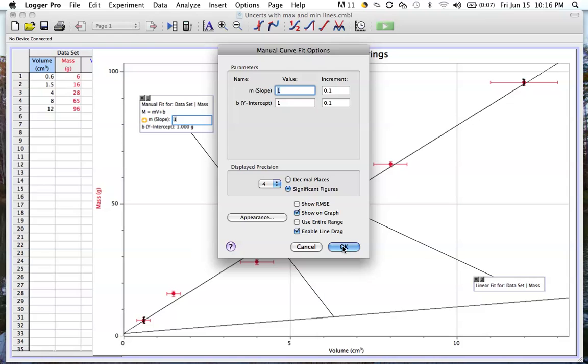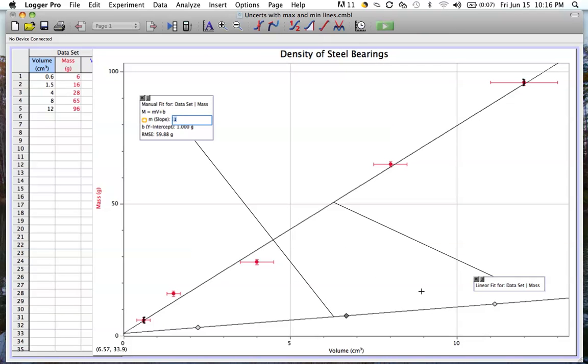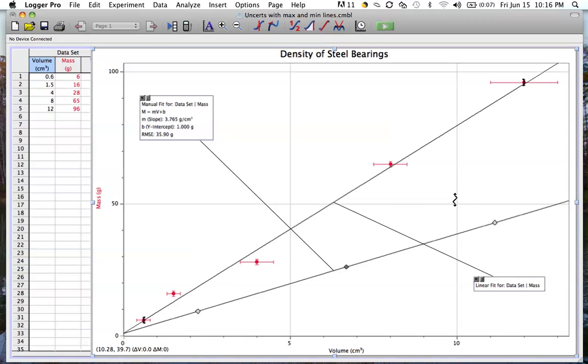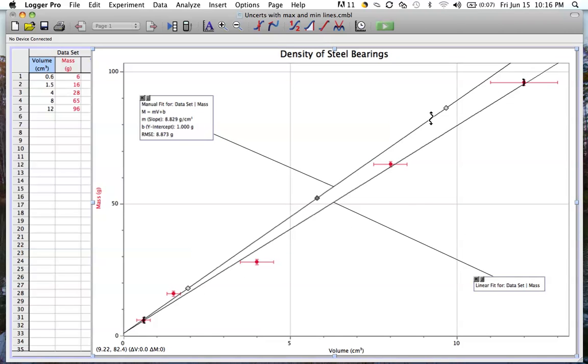Now I can move this to set my maximum uncertainty, which will be right about there. Remember I'm wanting to get to this corner where my x uncertainty and y uncertainty meet, and then do the same down here going to this corner.